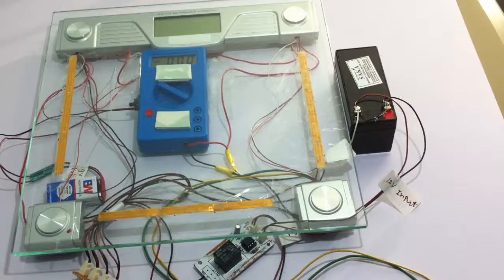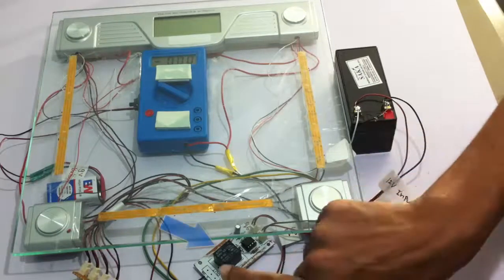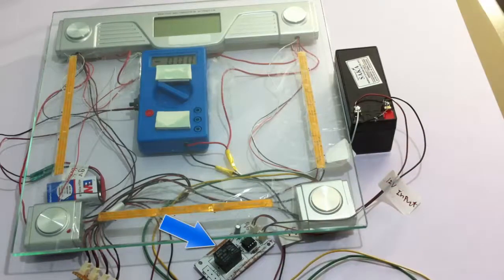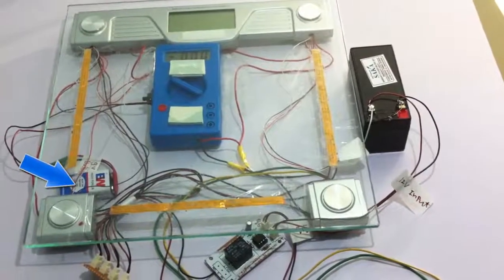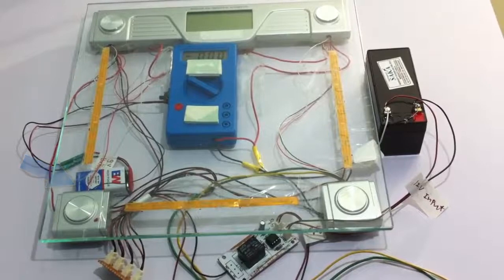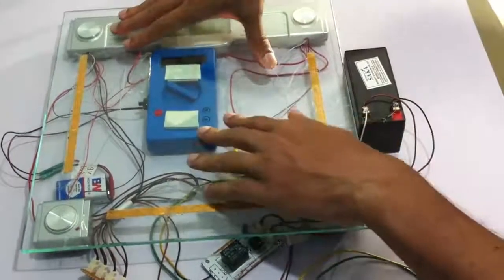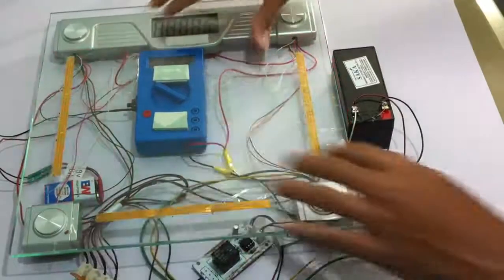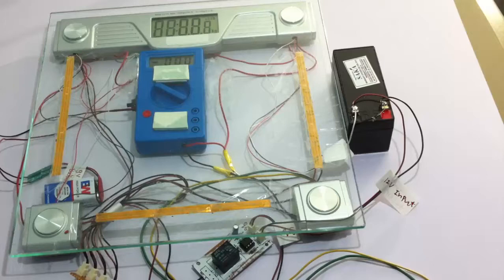This is the switching circuit here, and this is one more battery we have connected for charging. Whenever a user steps on it, the voltage is generated here and also it shows the weight. So this is how footstep power generation using piezoelectric sensors works. Thank you.